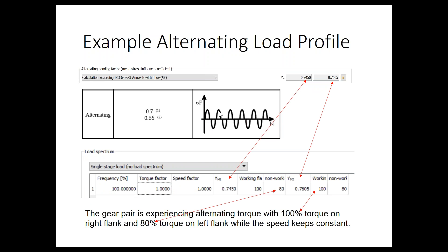For an alternating load profile, you go to the factor page and select the alternating bending factor, changing it to Annex B ISO 6336, and it will automatically populate your YM factors. This defines how much load in the positive direction is on the working flank versus the negative flank. In this case, 100% of the load is applied to the working flank, and only 80% of the reference load is applied to the non-working flank. The speed remains constant throughout.